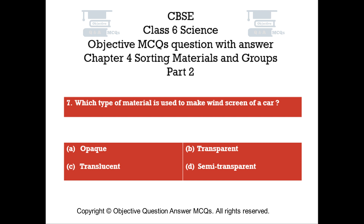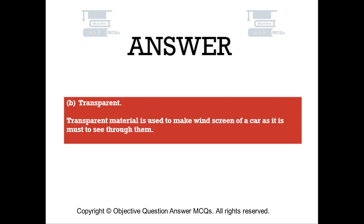Question number 7. Which type of material is used to make the windscreen of a car? Option A: Opaque. Option B: Transparent. Option C: Translucent. Option D: Semi-Transparent. The right answer is Option B. Transparent material is used to make the windscreen of a car, as it is necessary to see through it.